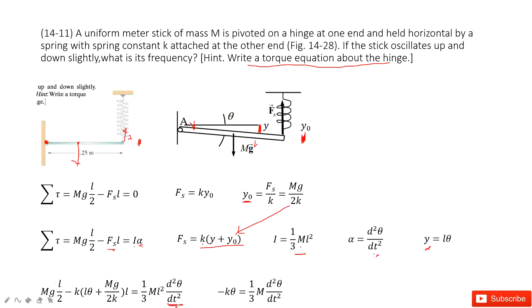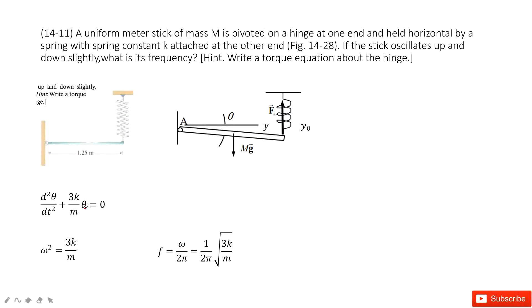Now we simplify the equation. The Mg·L/2 terms cancel with the K·Y₀·L term, and L² terms also cancel, leaving a clean equation in theta. This has the form of simple harmonic motion. The angular velocity omega squared equals 3K/M. Therefore the frequency is omega over 2π, giving us the final answer.